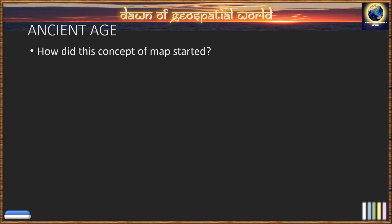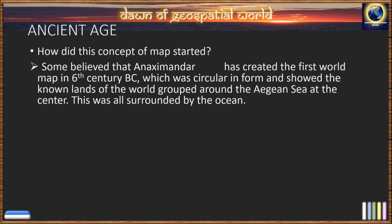Some scholars still believe that ancient cave art has also depicted landscape. These were used to navigate the nature that people knew. Some believe that Anaximander created the first world map in the 6th century.